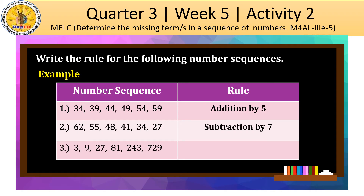And for number 3, we have 3, 9, 27, 81, 243, and 729. The rule here is multiplication by 3.